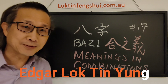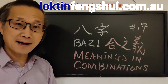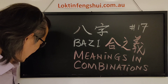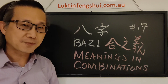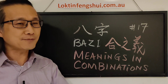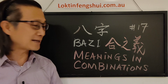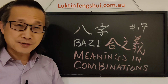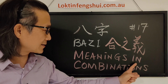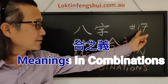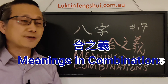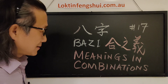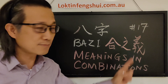My name is Edgar Lok-Tienyung and this is my website. Today we continue to talk more about the Ba-Tzu. I do not write for beginners because if you have watched all the videos before and paid attention, you are already getting over the beginner level. Today we're going to talk about the meanings in combinations — this is video 17. Last video we talked about the rules of combination, and now in this video we're going to talk about the meaning of combination.